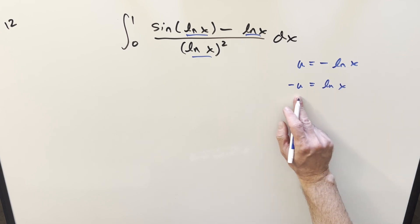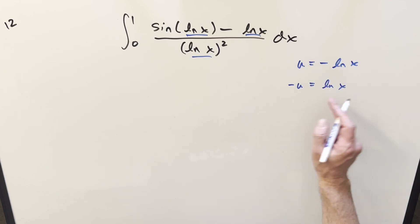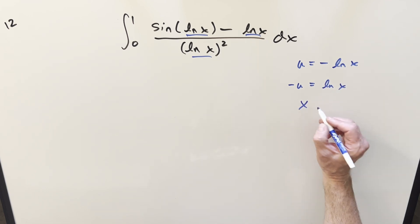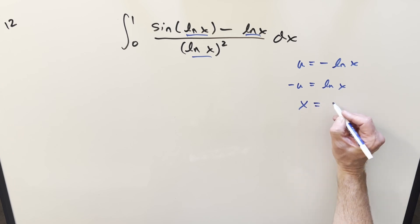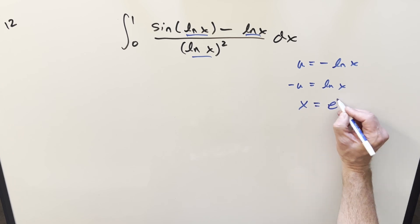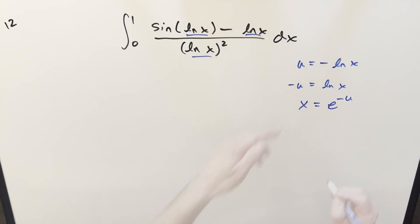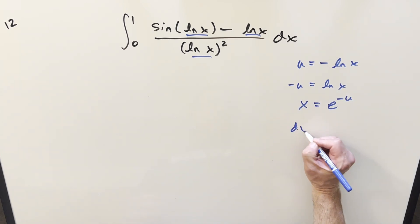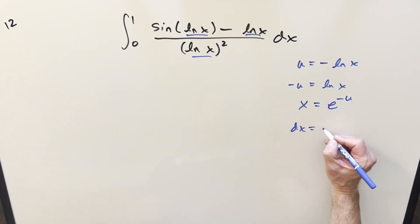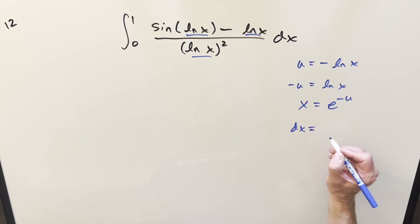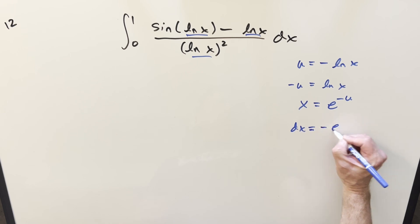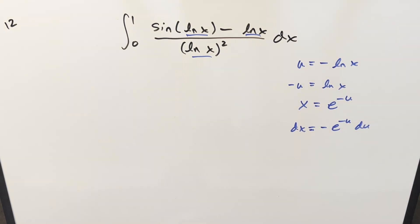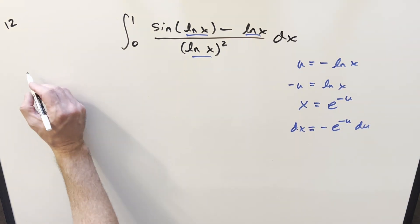So with u = -ln x, moving the minus sign and multiplying by minus 1 on both sides, we have ln x = -u. Solving for x using log properties, we get x = e^(-u). Taking the derivative, our dx value is just -e^(-u) du.